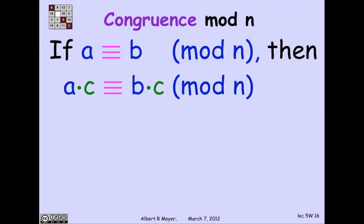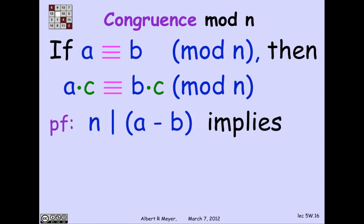It's also the case that if a is congruent to b, then a times c is congruent to b times c. This one takes a one-line proof.